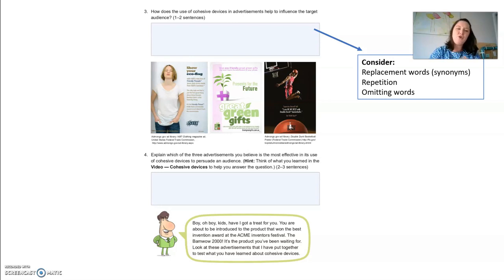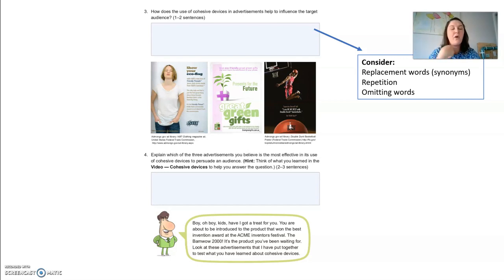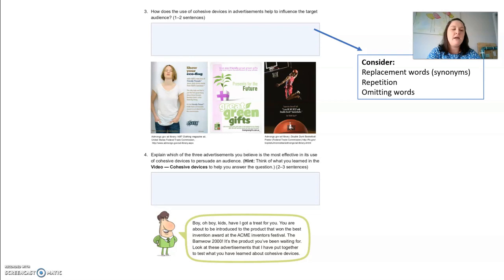Let's lead into question four: explain which of the three advertisements you believe is the most effective in its use of cohesive devices to persuade an audience. For me, the double dunk advertisement is most effective in its use of cohesive devices because there isn't much text, and that's why it is persuasive. The product's target audience doesn't want to read very much, so they've got very little text to read. The limited number of cohesive devices has been chosen on purpose. The repetition is short, sharp, and to the point, and unnecessary words have been omitted. That particular phrase — 'be my best and do your best' — has been repeated a couple of times on purpose for its persuasive effect.